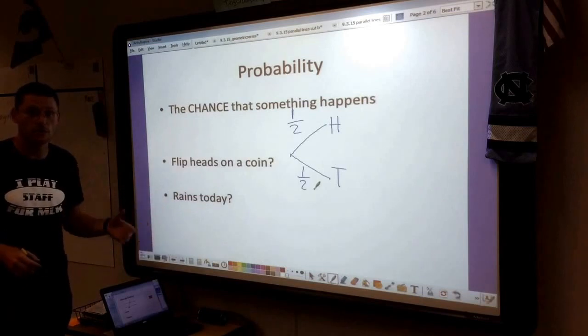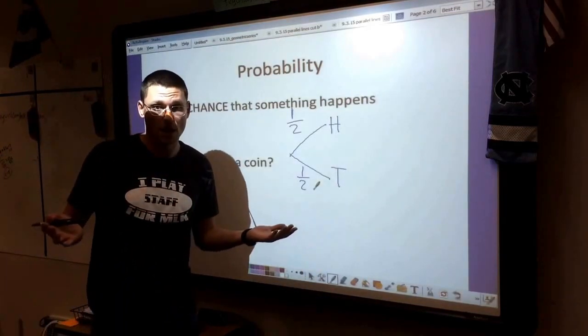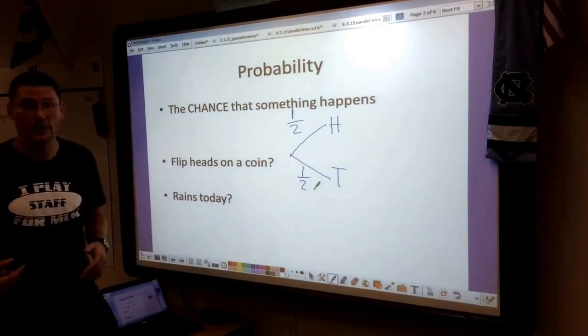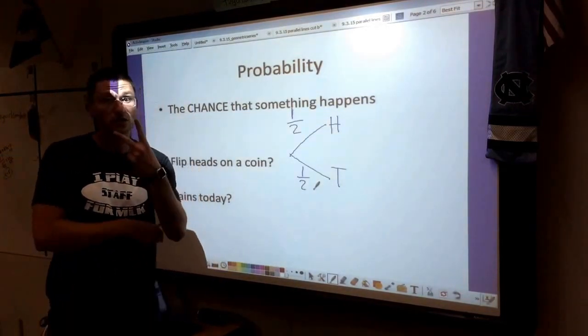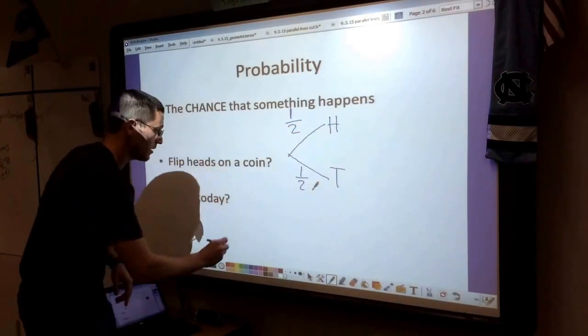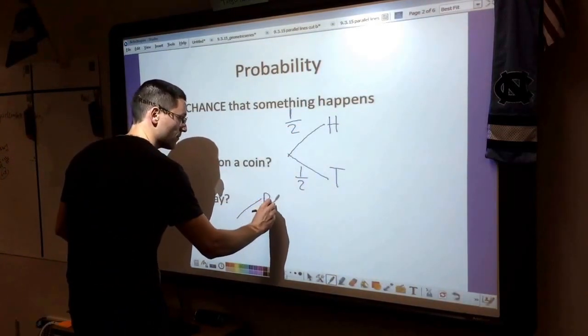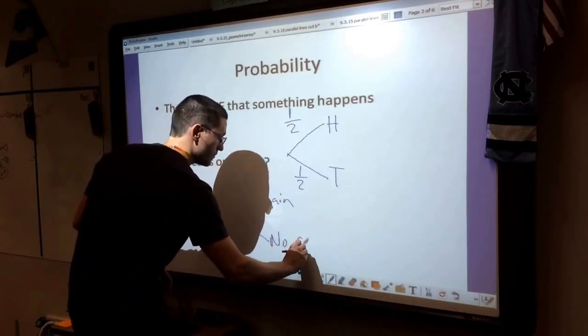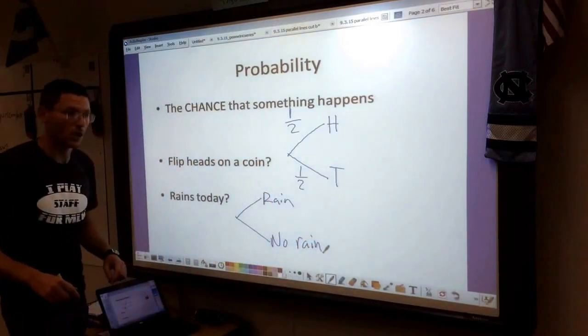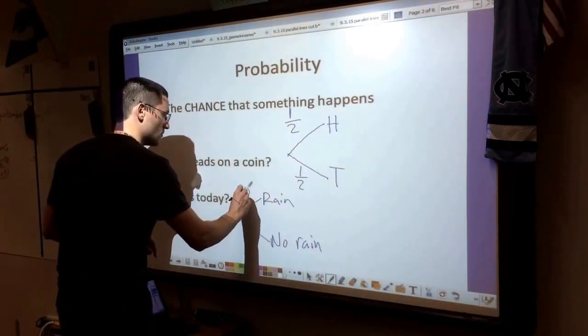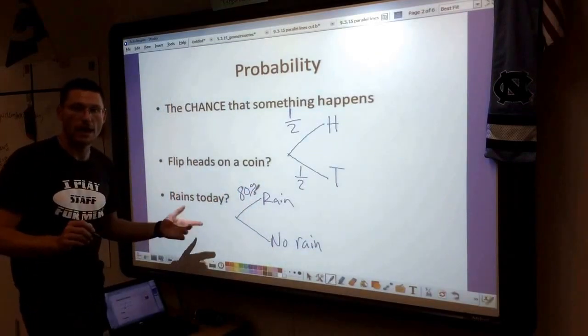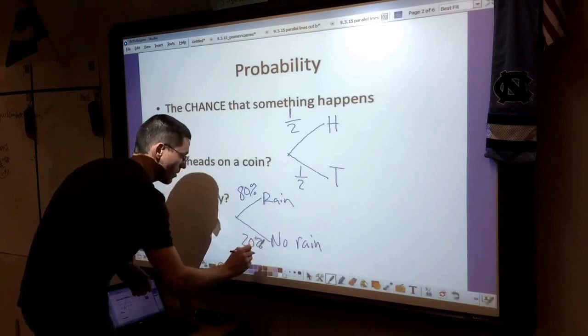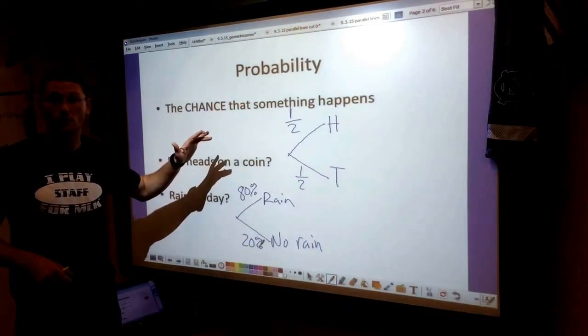The idea stays the same when we start talking about probability in other ways. If the weatherman says there's an 80% chance it's going to rain today, there's two outcomes, same as there were two outcomes here. It's either going to rain or it's not going to rain. There's an 80% chance of rain, which means there's 20% left over for no rain. We're going to be using these trees to model more difficult problems.